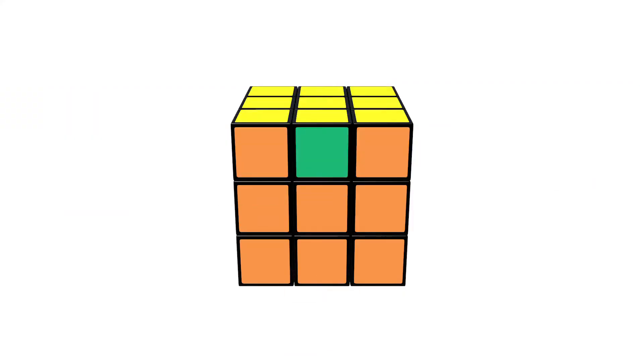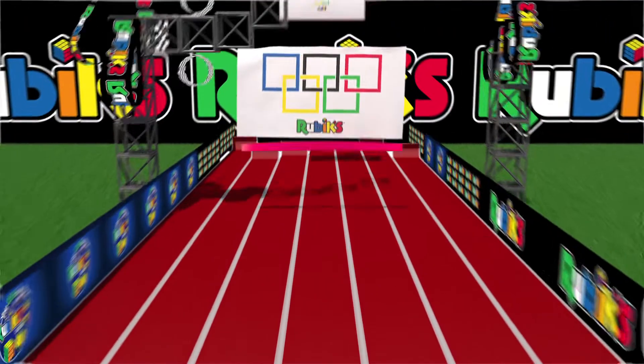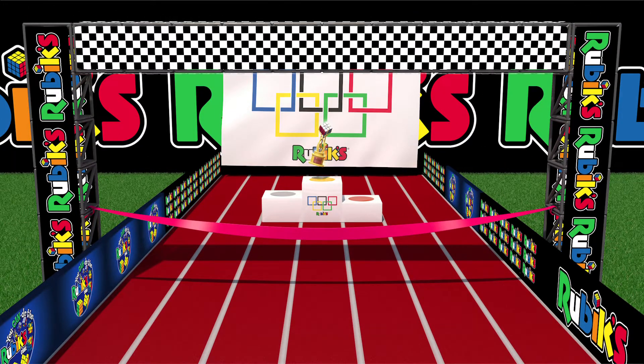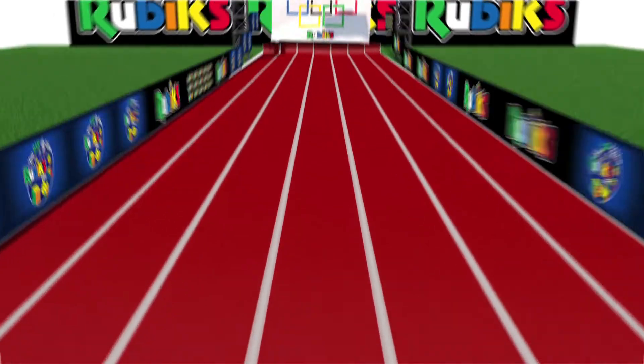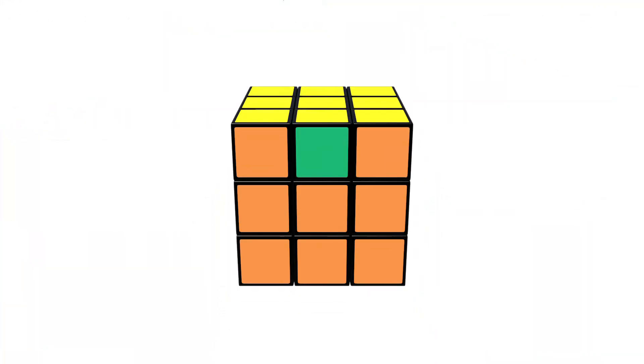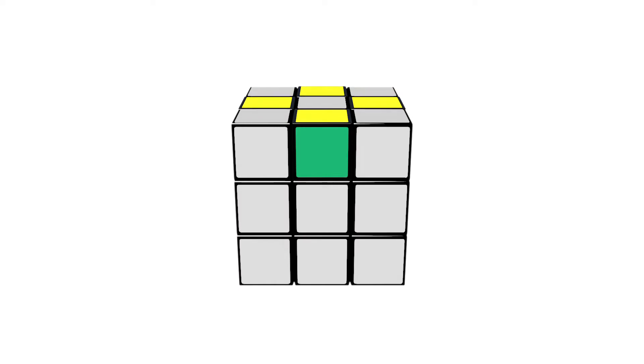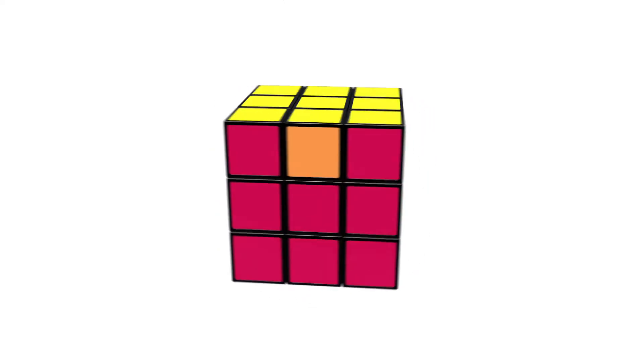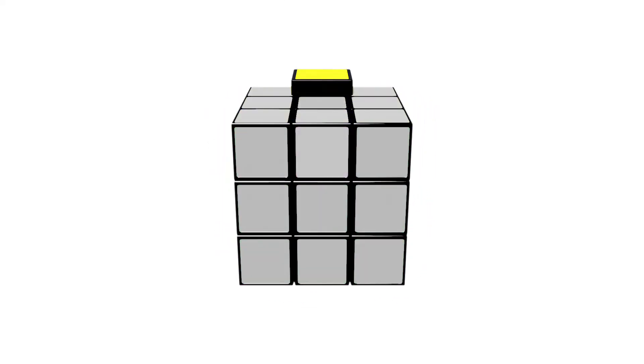Okay, here's part two, the final set of moves for the big finish. Ready? Let's do it. All we need to do now is to position the yellow edges correctly. If one edge is correct, then orient the cube so that the correct edge is on the back face like this.